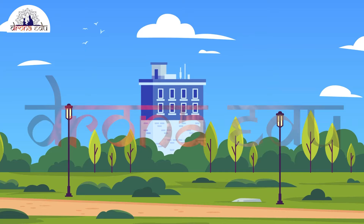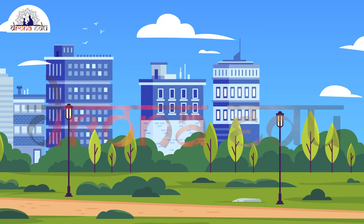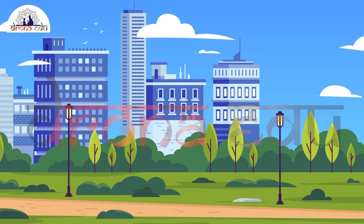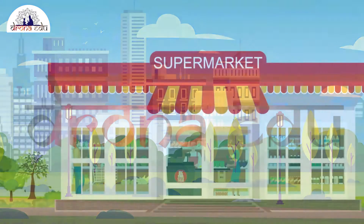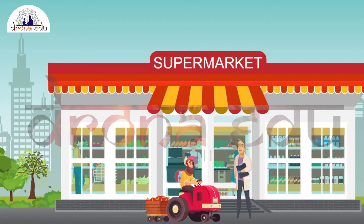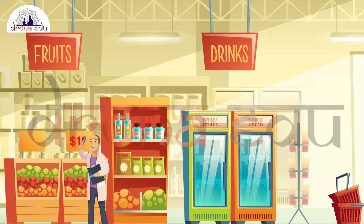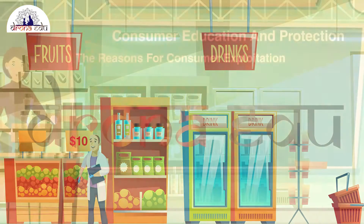When agricultural occupations developed, it changed the marketing methods. The direct transactions between the producer and the consumer almost stopped. The price fixation of goods and services was done mainly by the middleman. The existence of middlemen came into force, leading to many hindrances.